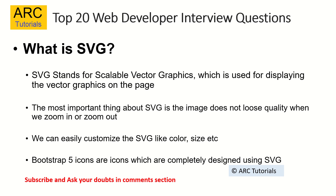What is SVG? SVG stands for Scalable Vector Graphics — it is used for displaying vector graphics on the page. The most important thing about SVG is that the image does not lose its quality when we zoom in or zoom out, which is one reason responsive images are now moving to SVG. We can also easily customize SVG properties like color, size, and background. Bootstrap 5 icons, for example, are all completely redesigned with SVGs.